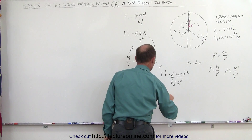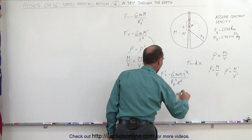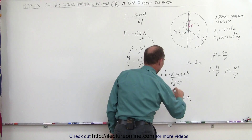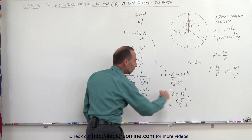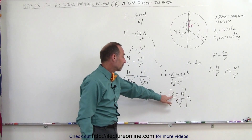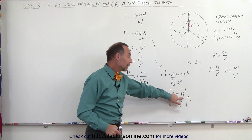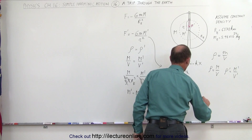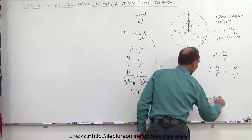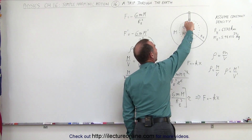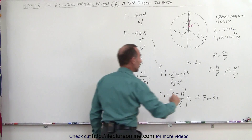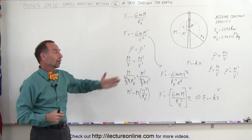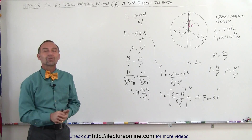So F prime equals minus G times m times M divided by the radius of the earth cubed, times r. Putting the first part in brackets, we can see those terms — G, m, M, and the radius of the earth — are all constants. This matches exactly the format of F equals minus kx, where x is displacement from the equilibrium point just like r is the distance from the center. Therefore, an object moving through the earth in this fashion acts like an object on a spring undergoing simple harmonic motion.